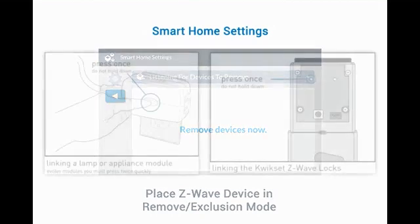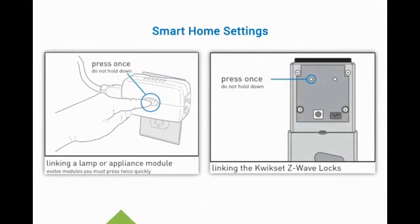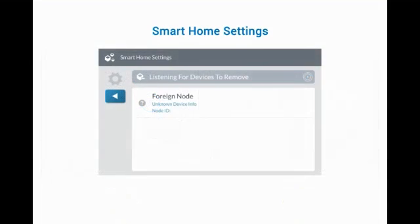Z-Wave devices are removed in various ways. For example, a lamp module requires a double tap, while a quick set door lock requires a single press of the Learn Remove button. The panel will display the Z-Wave device has been removed. Press the left arrow to exit.